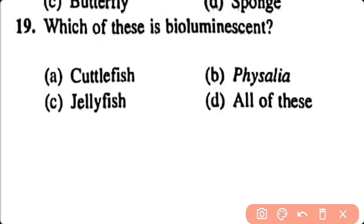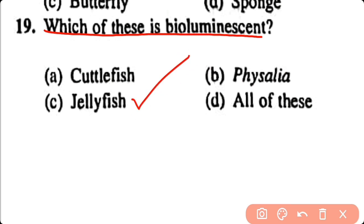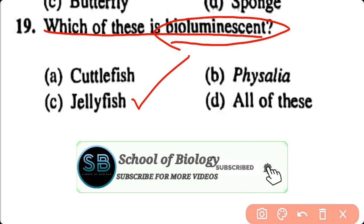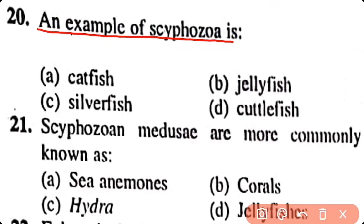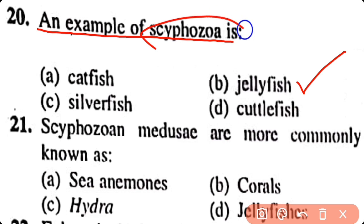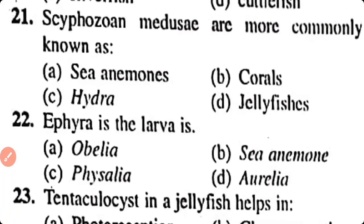Question number 19. Which of these is bioluminescent? Cuttlefish, Physalia, jellyfish, all of these. Correct answer is option C. Among the given options, jellyfish is a bioluminescent animal. Jellyfish is an example of Scyphozoa.